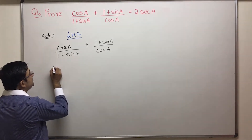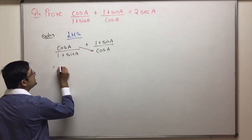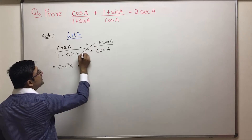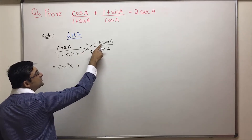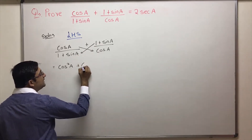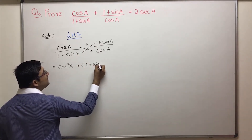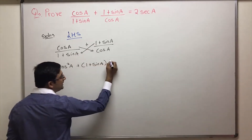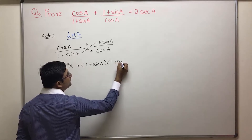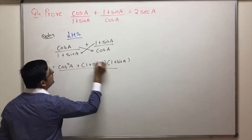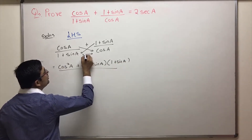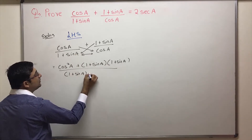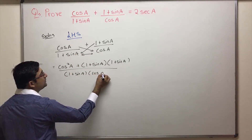We have two terms. So cos A into cos A, that is cos squared A, plus this multiplied by this — 1 plus sin A into 1 plus sin A, that is (1 plus sin A) whole squared. Upon the multiplication of the two denominators, we have 1 plus sin A into cos A.